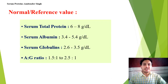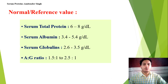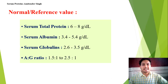What are the normal values? The total protein concentration in serum in a normal individual is 6 to 8 grams per deciliter. Serum albumin is 3.5 to 5.4 grams per deciliter, and serum globulin is 2.6 to 3.5 grams per deciliter. The albumin to globulin (A:G) ratio is 1.5:1 to 2.5:1 — meaning albumin is always present in greater quantity than globulin.